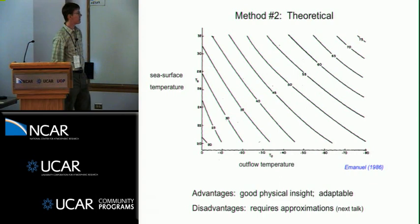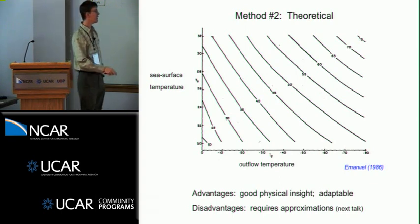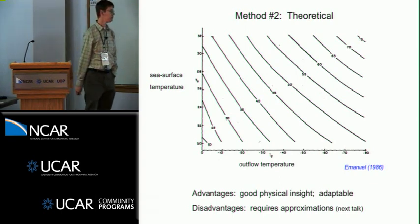The advantages of the theoretical method is you get great physical insight. You can really put your finger on what controls maximum intensity and why. It's also adaptable. You can run it in future climates, other planets if you're interested in that sort of thing.